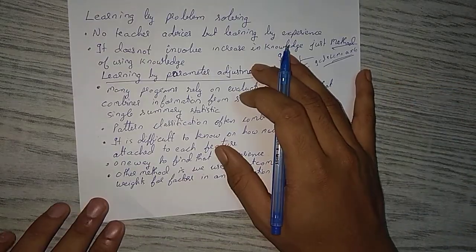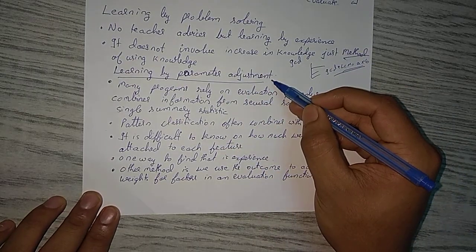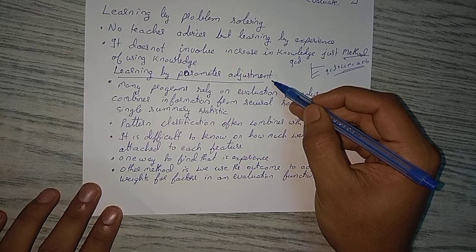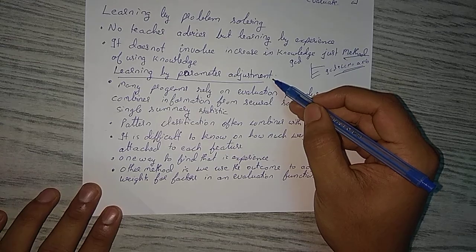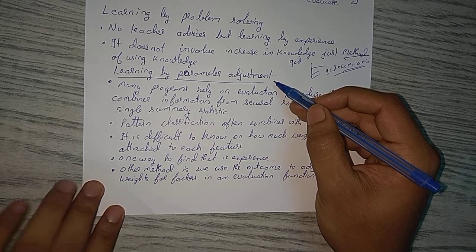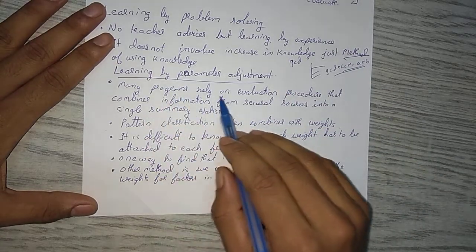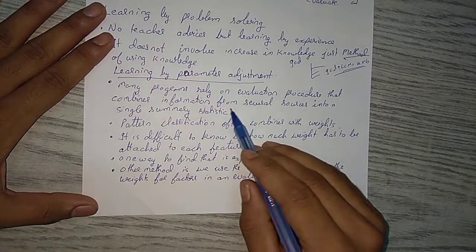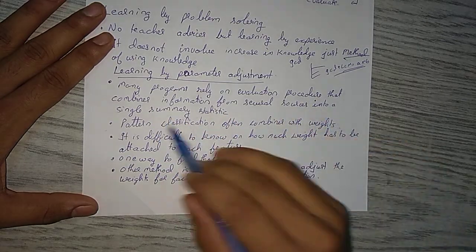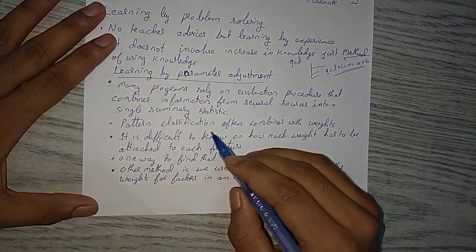In this we have learning by parameter adjustment, for which we need to learn about neural networking. Neural networking is a very interesting topic and I would like to make a video on that. In neural networking, many programs rely on an evaluation procedure that combines information from several sources into a single summary statistic.